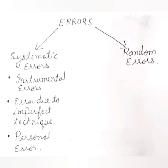For example, if we are performing an experiment related to electricity and there are some voltage fluctuations, this error can't be rectified because the voltage fluctuations are not in our hands. Similarly, the same person performing an experiment might get a different reading the second time due to some unpredictable reasons. Since the source is unknown, these are called random errors, and because the source is unknown there are no sub-types of random errors.